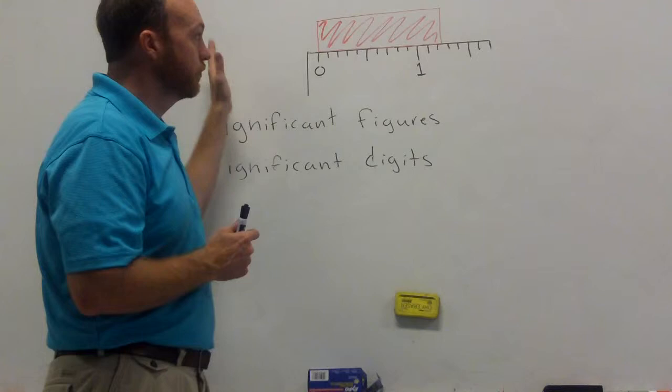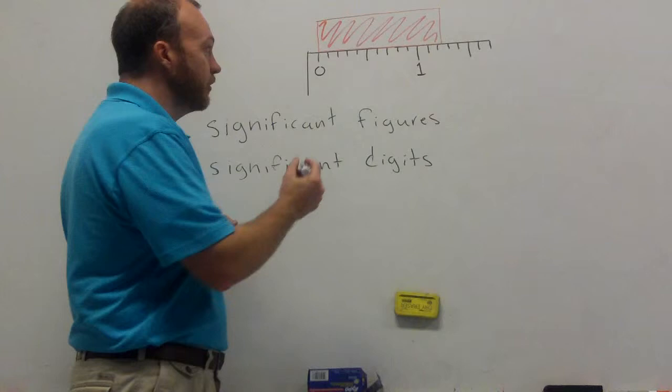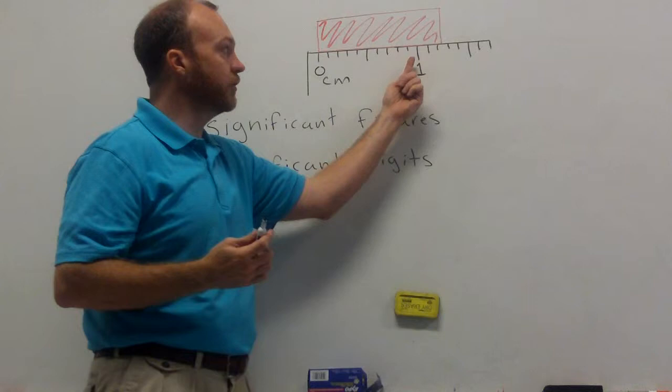Now, I want to illustrate that by looking at an example. So, here on the board, I have drawn a ruler. The ruler is greatly magnified so that you can see. I want to pretend this is a standard metric ruler, so the big numbers here are centimeters. So, zero centimeters, one centimeter, two centimeters.